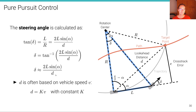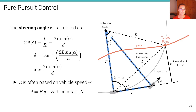Here D is the look-ahead distance, which is a parameter of our system. It's important to note that this look-ahead distance should be based on vehicle speed — if the vehicle speed is high, we want a larger look-ahead distance to avoid abrupt steering maneuvers. In practice, D is often chosen as a constant k (a tunable parameter) times the velocity of the vehicle.